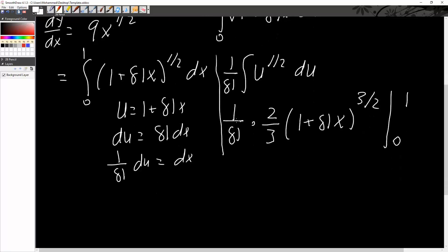So I plug it in. 1 over 81 times 2 over 3 would be 2 divided by 243. When we insert 1, we get 82, so 82 raised to 3 halves. When we put 0, we get 1. 1 raised to 3 halves is simply 1. So minus 1, close parenthesis.